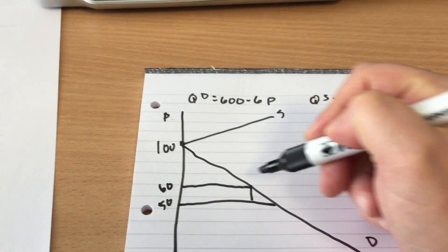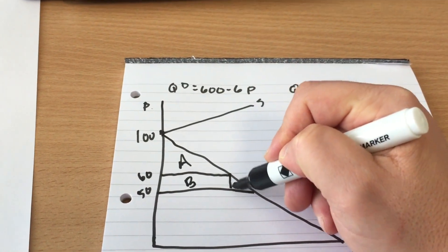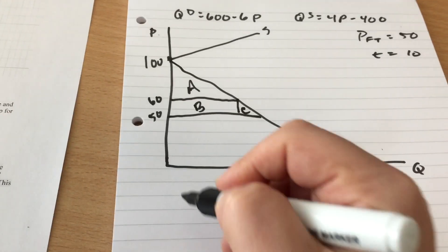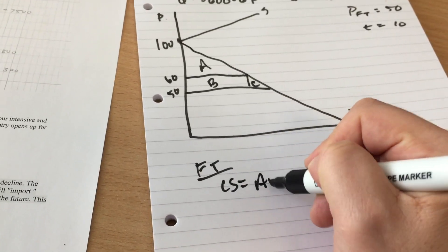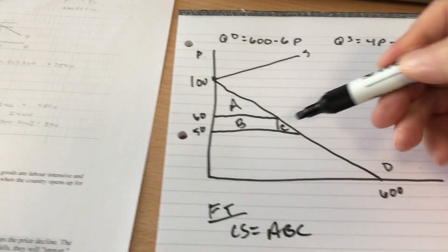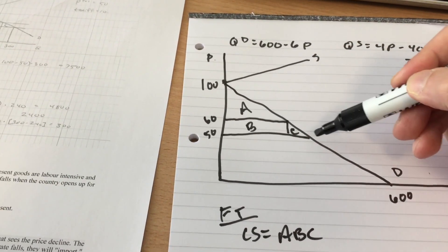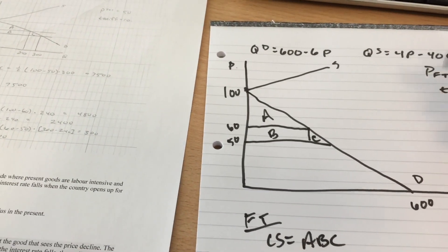So what do we have here? A, B, and C. So under free trade consumer surplus is A, B, and C. Everything above the price consumers pay added across how many they buy underneath the demand curve.